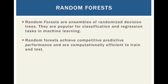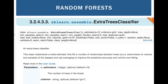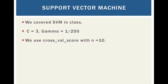Random Forests are ensembles of randomized decision trees, popular for classification and regression tasks. They achieve competitive predictive performance with computationally efficient training and testing. We used the Random Forests classifier and Extra Trees classifier from the sklearn ensemble library. We also used a Support Vector Machine classifier, setting C equals 3 and gamma equals 1 divided by 250, and used the cross-validation score from sklearn with the number of folds equals to 10.